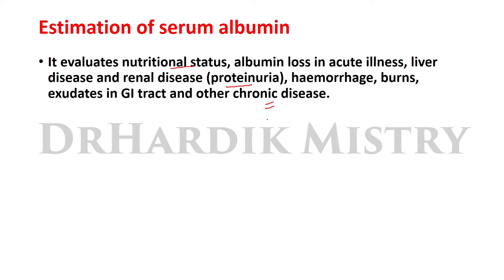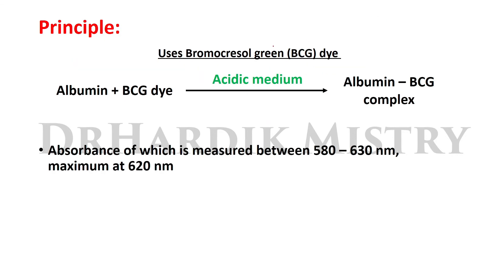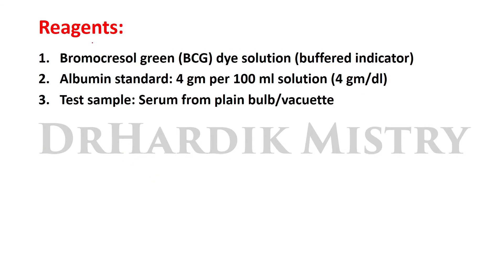In all these conditions, serum albumin will fluctuate. Now the principle of this BCG method: this test uses bromocrysol green (BCG) dye. Albumin reacts with the BCG dye in the presence of an acidic medium to give an albumin-BCG complex. The absorbance of the albumin-BCG complex is measured between 580 to 630 nanometers, with maximum absorbance at 620 nanometers, colorimetrically.